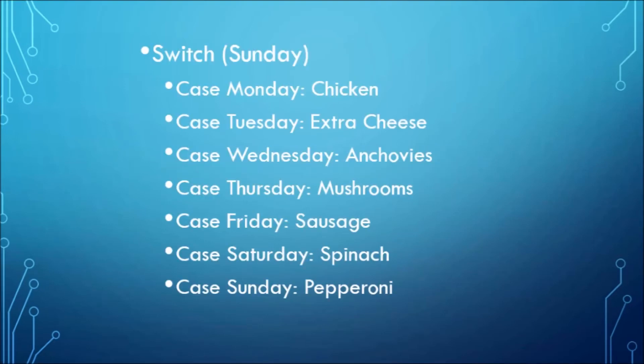Let's say that today is Sunday and you want to order a pizza from a restaurant that has daily specials. In this example, we'll use a switch and case approach instead of running through an entire if-then-else chain. The switch is evaluated once, that value is compared to the value of each case, and if there is a match, then that code in the block is executed. Switch and case statements can be quicker than running through an if-then-else chain.